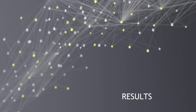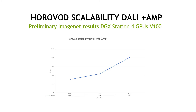Let us now look at a couple of results. First, preliminary results obtained with our code base on a DGX station with four V100 GPUs, using Horovod with DALI and automatic mixed precision. When going from one to two GPUs, we get a 1.5 times speed-up, and then we get a linear speed-up from two to four GPUs.